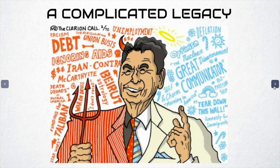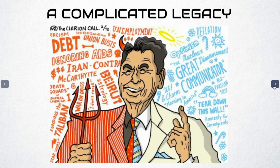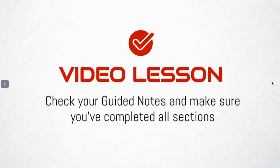Reagan is a complicated guy with a complicated legacy. He was funny, a great communicator, and connected with lots of people, but he also supported policies that did real harm. In our next lesson we're going to be talking about the war on drugs under Reagan and his failure to address the AIDS crisis — both of which have a real lasting impact on us today. Thank you for focusing on this video; I know today was a long one, but sometimes we have to power through and I appreciate your willingness to get it done.